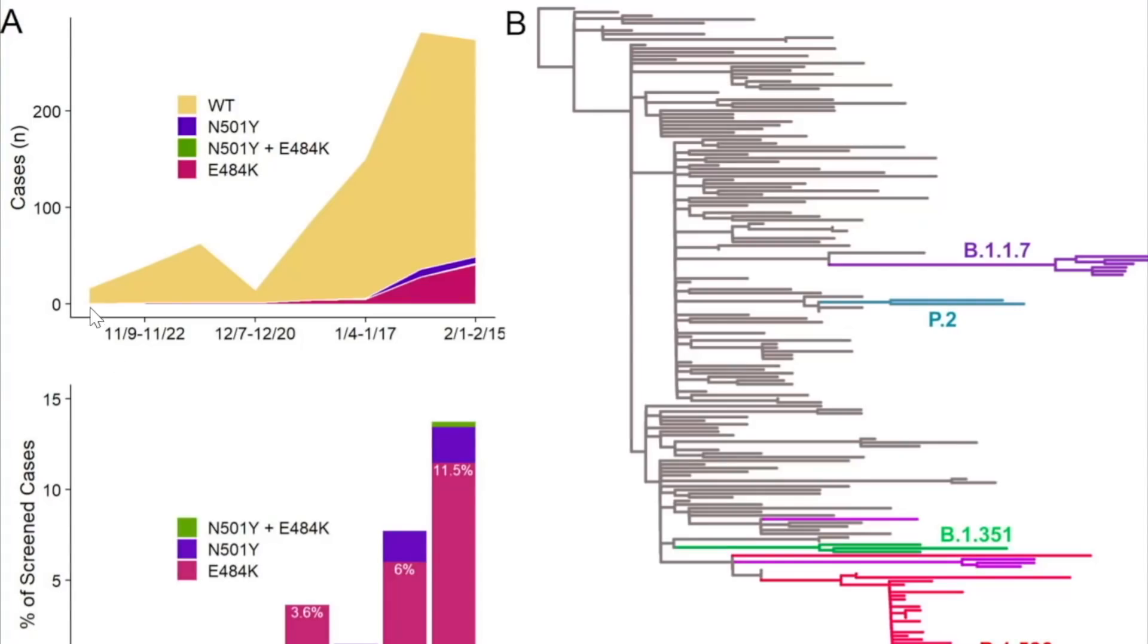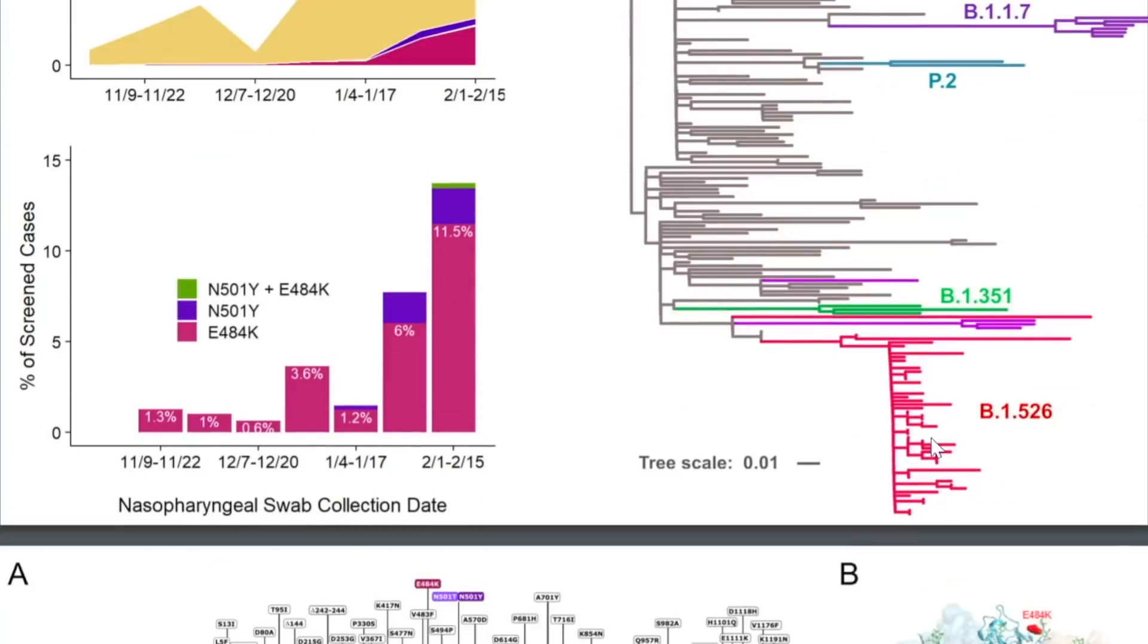They also have some very useful graphs at the end of the article which show the prevalence of the wild-type SARS-CoV-2 infection over time and how there has been an increase in the E484K mutation. You can also see the phylogenetic tree and how these different variants have come about.